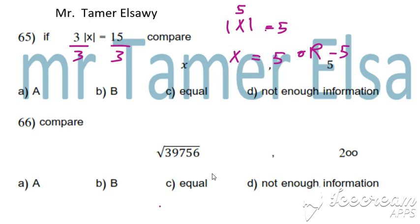Because absolute of 5 is 5, absolute of negative 5 is 5. Which is bigger, x or 5?